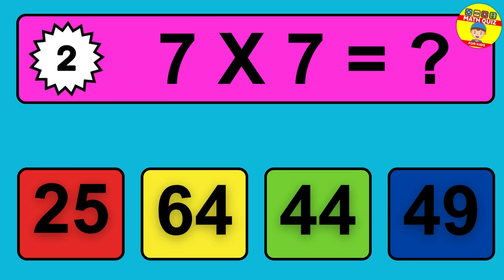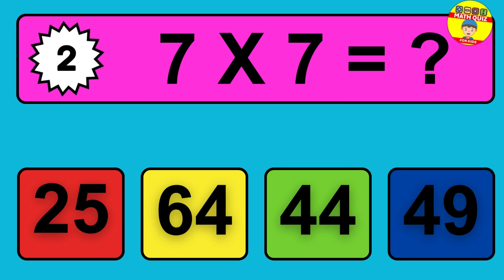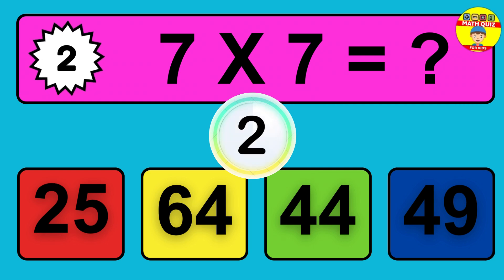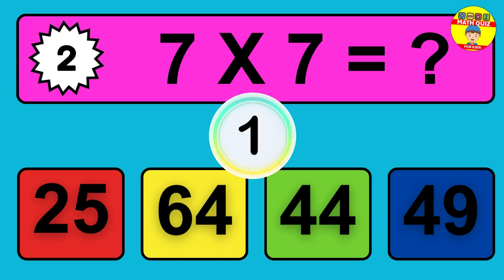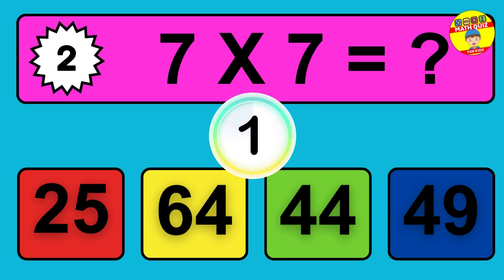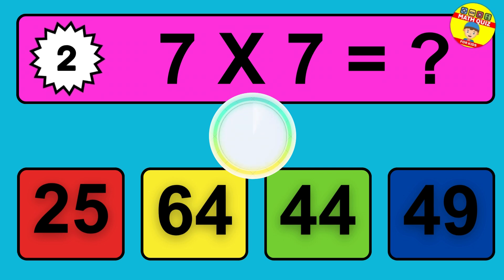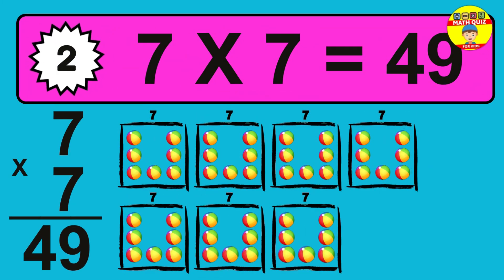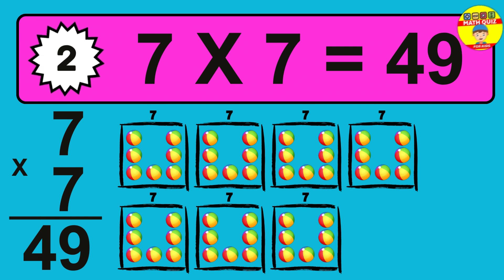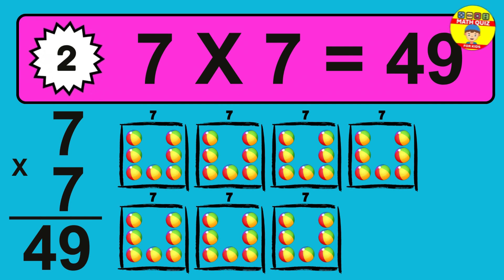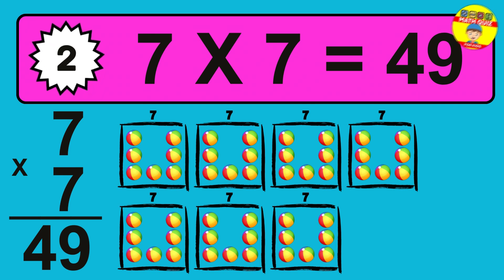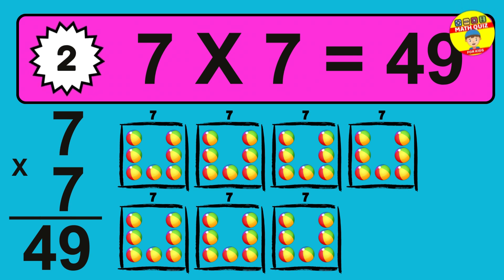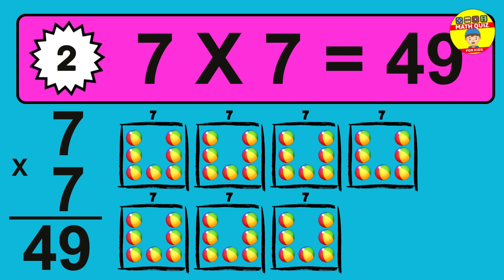Question 2. 7 times 7 equals what? So the answer is 7 times 7 is 49. To calculate, we have 7 groups with 7 balls each one. So how many balls do we have? 49 balls.